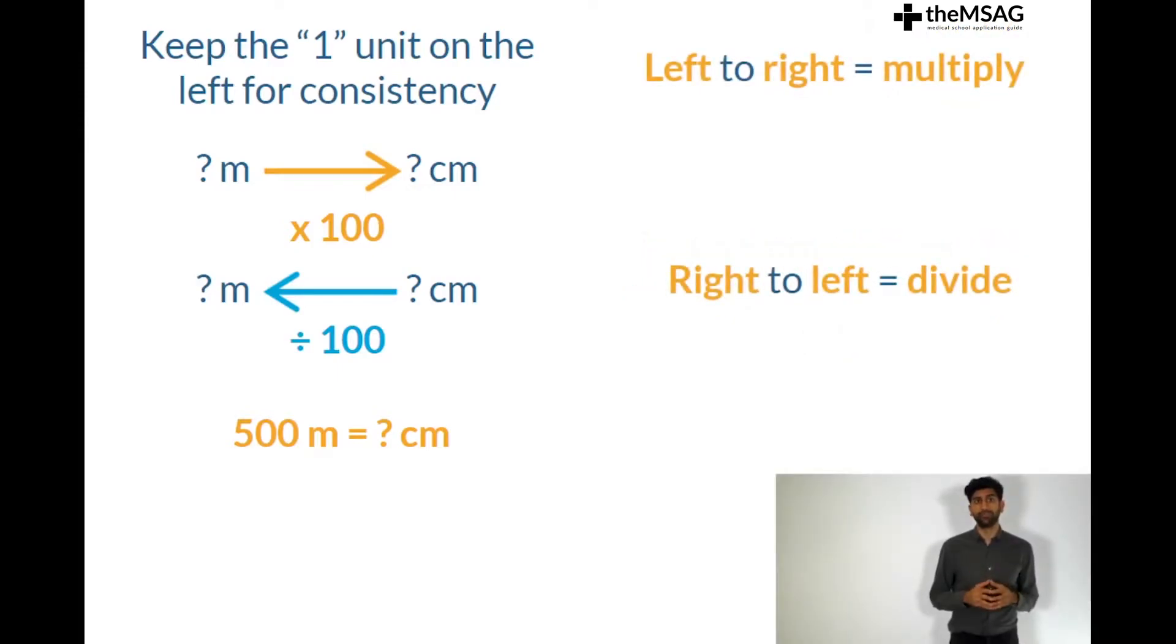We want to go from 500 meters to centimeters which is left to right so we multiply by 100. 500 times 100 equals 50,000. 500 meters equals 50,000 centimeters. That doesn't seem too bad right?